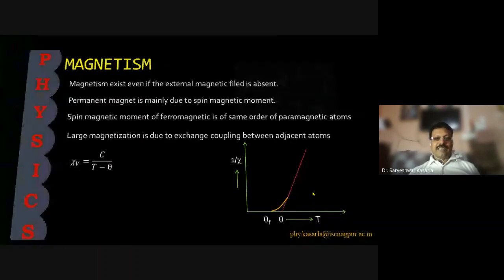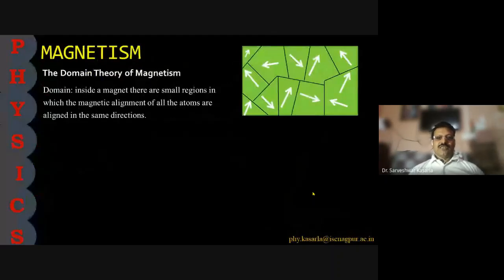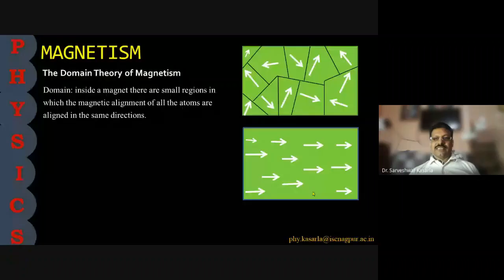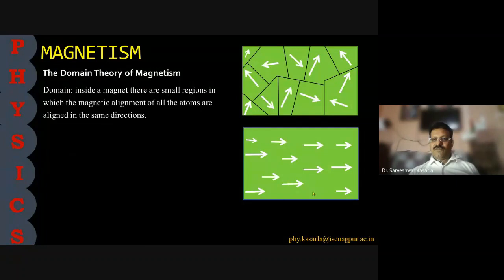In domain theory, one can imagine regions called domains where all the atoms are oriented along the same direction — that is, the magnetic moments in that region are all the same, coupling together to get alignment along the same direction. Domains are small regions in which the magnetic alignment of all atoms is aligned in the same direction. When an external magnetic field is applied, all the domains orient along the external field and the material is converted into a permanent magnet.